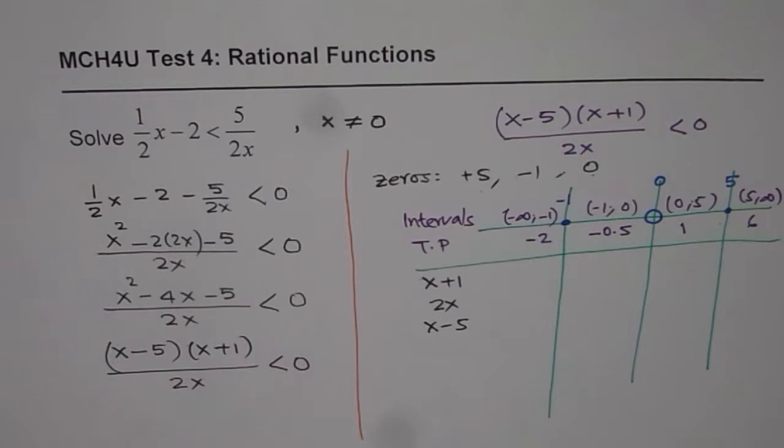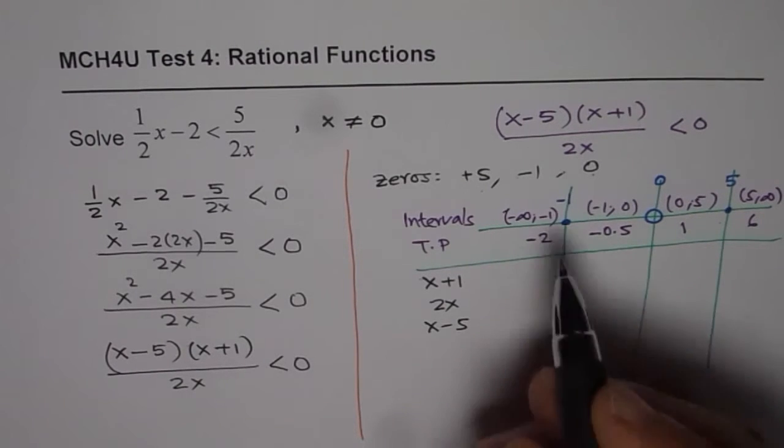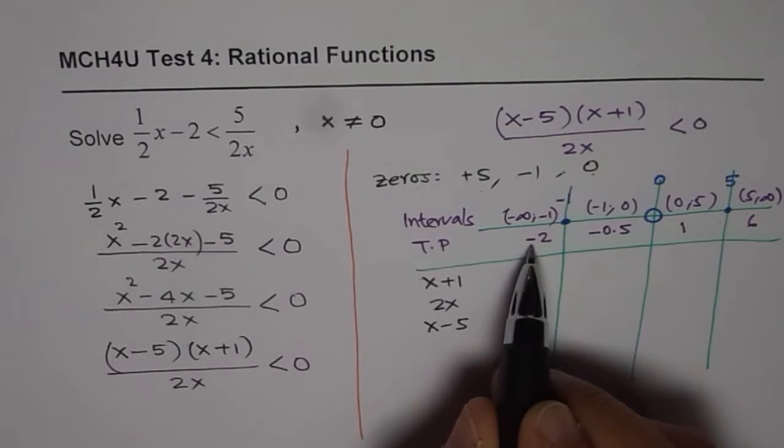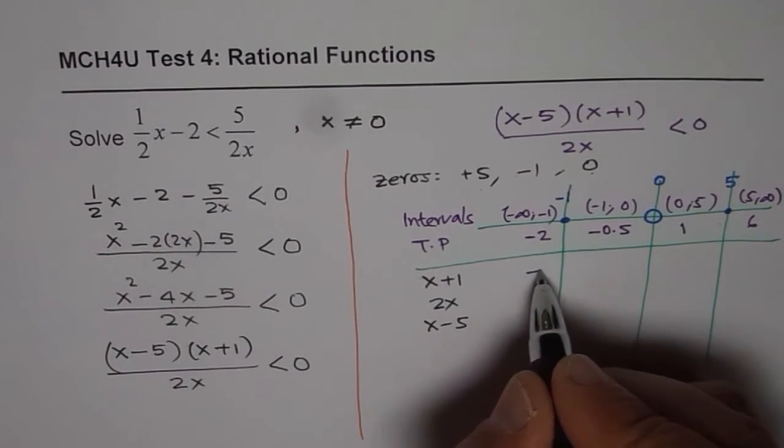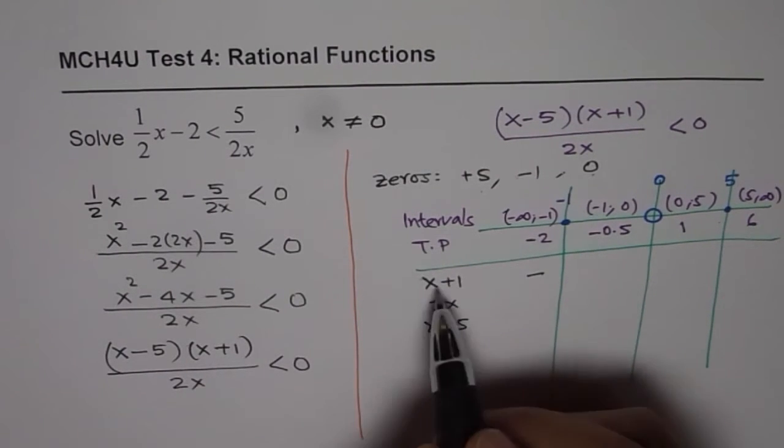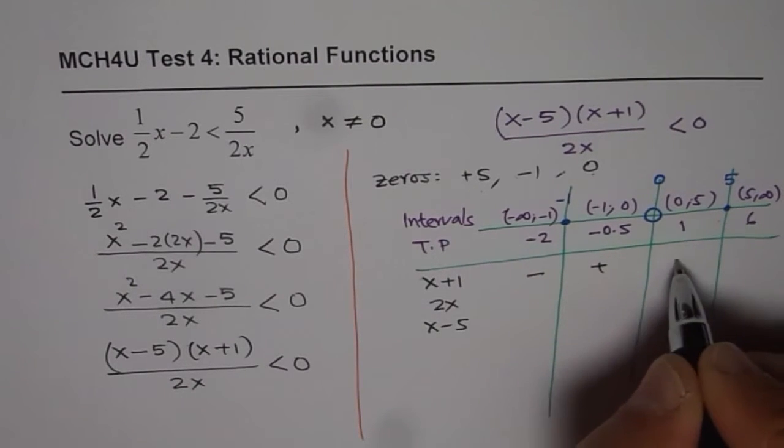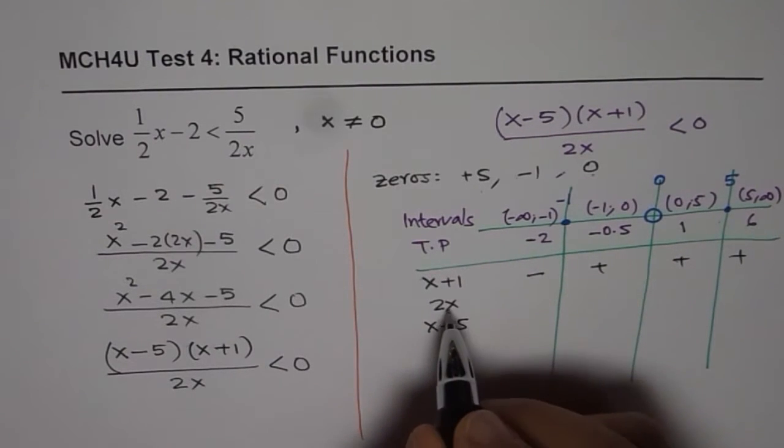Now, at each test point, let us see. If I place minus 2 for x, I get a negative value. But if I place minus 0.5, I get positive and I will get positive for these also. For 2x,